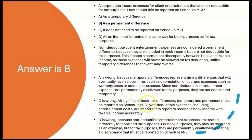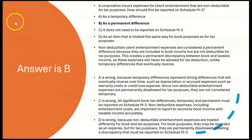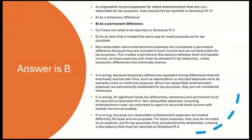C is wrong — all significant book-tax differences, both temporary and permanent, must be reported on Schedule M-3, so non-deductible entertainment expenses do need to be reported. D is wrong — non-deductible entertainment expenses are treated differently for book and tax: for book purposes they are recorded as an expense, but for tax purposes they are permanently disallowed, creating a discrepancy that must be reported on Schedule M-3 as a permanent difference.